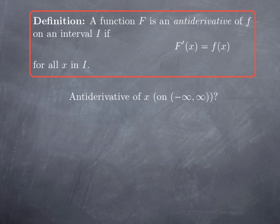An antiderivative of a function f on a given interval I is another function, say capital F, whose derivative is equal to the function f for all x in the interval I. So in some sense, it's going in the reverse direction compared with what we have done so far — we were studying the properties of a given function by looking at, among other things, the behavior of its derivatives.